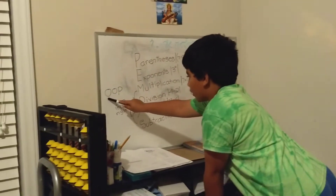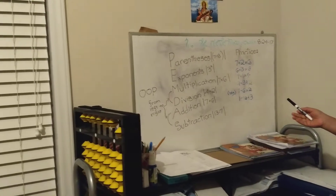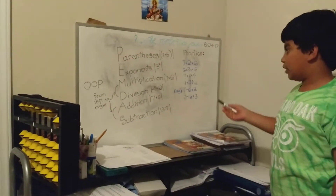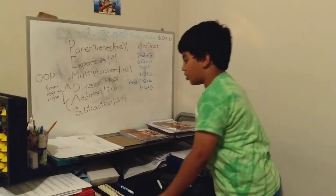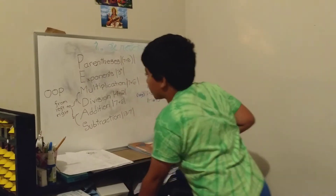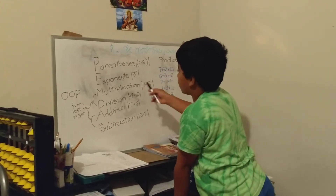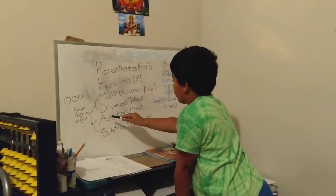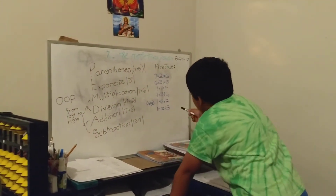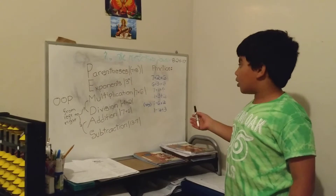This is a short form right here: OOP. Order of operations is really a series of steps a person has to follow in order to perform and solve these problems. First, we're going to do PEMDAS right here — I wrote it because you have to know this in order to solve it. PEMDAS is an acronym for Parentheses, Exponents, Multiplication, Division, Addition, and Subtraction. This is the series of steps you have to do to solve all of these problems.